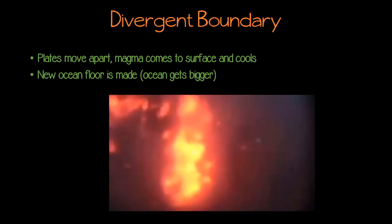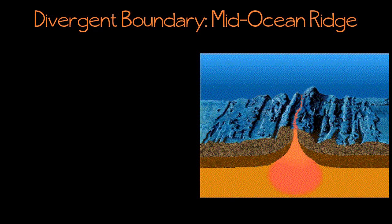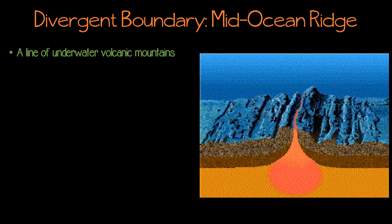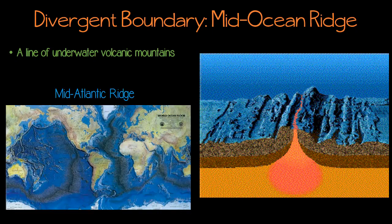As the magma cools and forms new rock, it gets bigger and forms what's called a mid-ocean ridge. A mid-ocean ridge is an underwater line of mountains that gets formed by this growing new rock created by a divergent boundary. A great example of a mid-ocean ridge is the mid-Atlantic ridge.